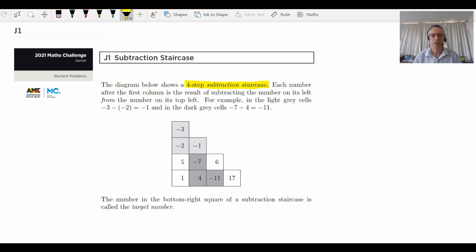Let's read it carefully. They're asking us to look at the light grey cells. Notice they've shaded some of these cells differently. We may notice that negative three subtract negative two, well, that's equal to negative three plus positive two is negative one. So that's how we're getting our numbers. Where does this negative 11 come from? It comes from negative seven take away four gives us negative 11. We're also given a new word, the target number. The target number is the bottom right square. So in this case, the target number is 17.